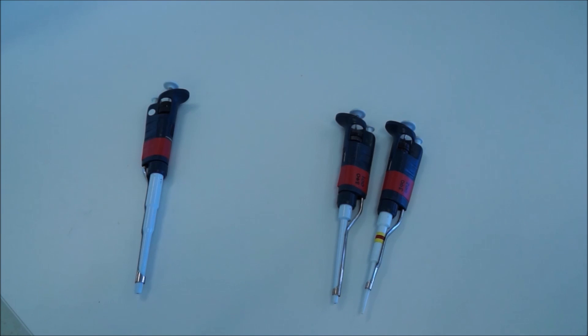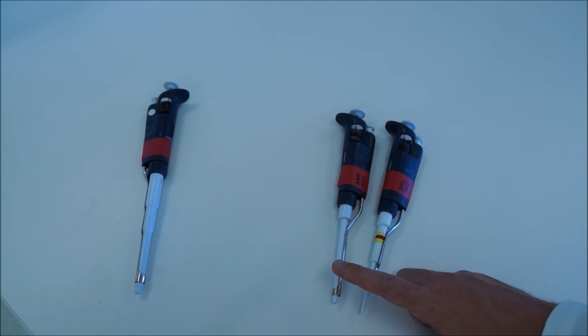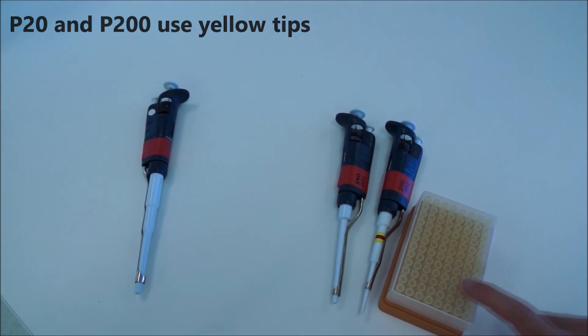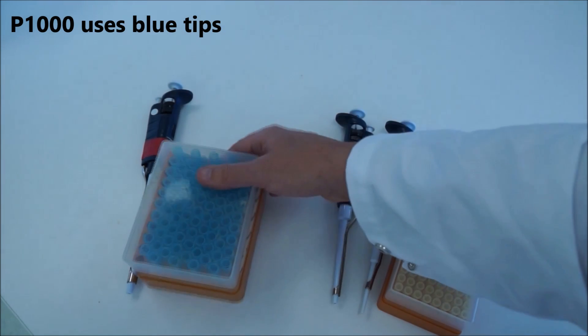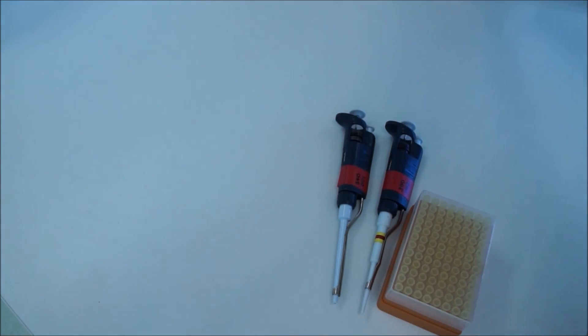Whenever you're using pipettes, you need to use a disposable plastic pipette tip because you don't want to get any contamination inside the actual pipette because we're reusing this. You can cause contamination in future experiments. So the P20 and P200 use yellow tips and the P1000 uses blue tips. We won't be using these today.